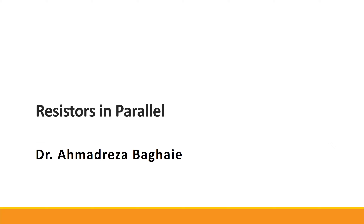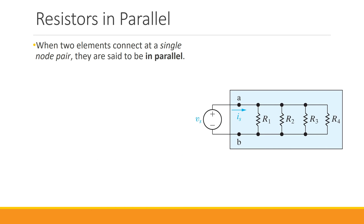In this video I want to talk about resistors connected in parallel. When two elements connect at a single node pair, they are said to be in parallel. Let's first see what happens when we have two elements connected in series, and then I'll show you when they are connected in parallel. We have these two resistors, but they are not connected yet.